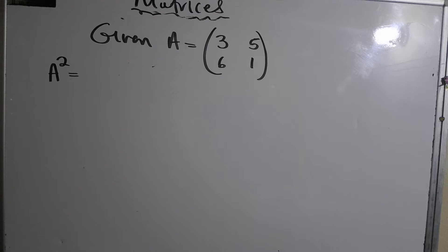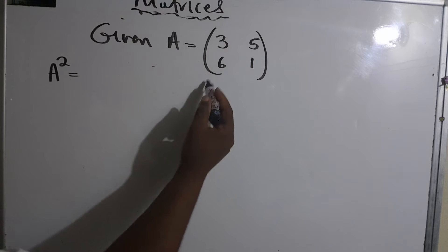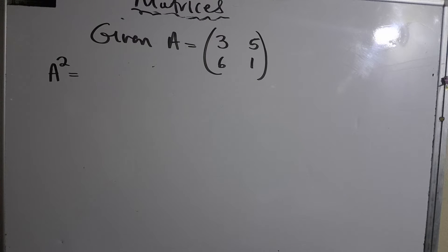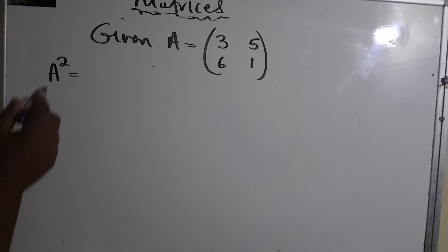Immediately I know what students are thinking: 3×3 is 9, 5×5 is 25, 6×6 is 36, 1×1 is 1. Nonsense! What we have to do is multiply the matrix by itself.